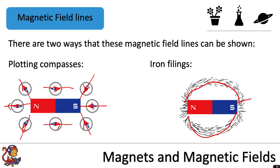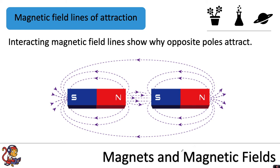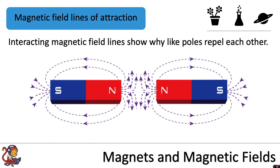Interacting magnetic field lines show why opposite poles attract. With two bar magnets coming together, their field lines interact, and because field lines go from north to south, you can see an attraction between opposite poles. With like poles — for example two north poles — the field lines repel each other as they try to seek the south pole, which is far away, resulting in repulsion.